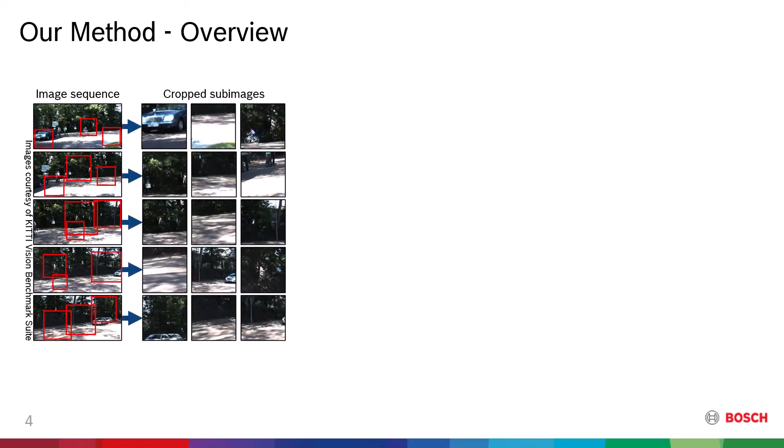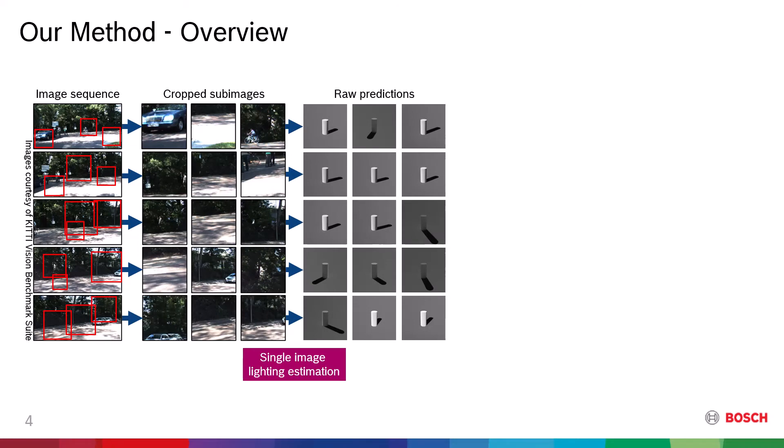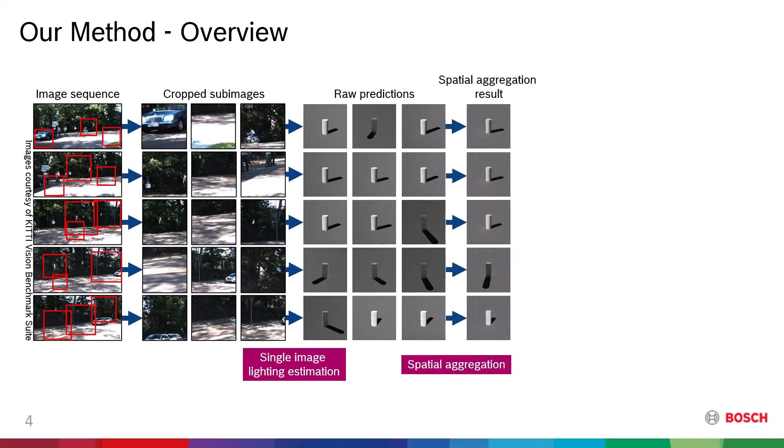We generate random sub-images from the given images and perform single image lighting estimation for each sub-image. Those estimates are then the samples in the spatial domain. We aggregate the spatial observations to get the representative estimate for each image in the sequence.